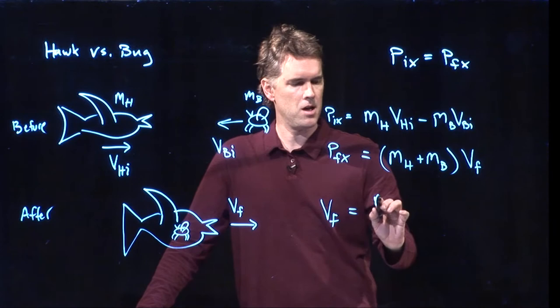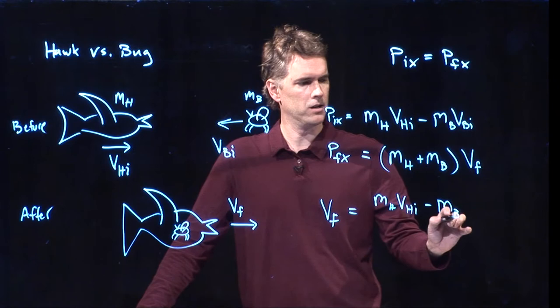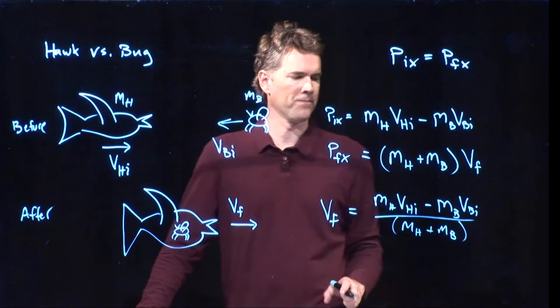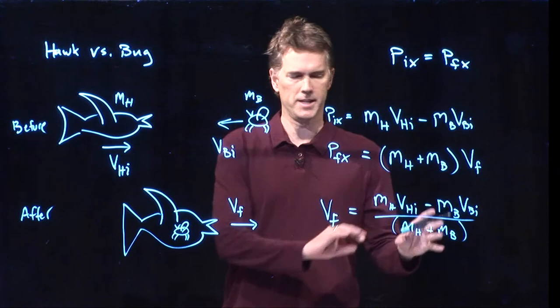V_f is equal to m of the hawk, v of the hawk, minus m of the bug, v of the bug, all divided by mass of the hawk plus the mass of the bug. Okay? That's what your solution looks like with all the variables still intact.